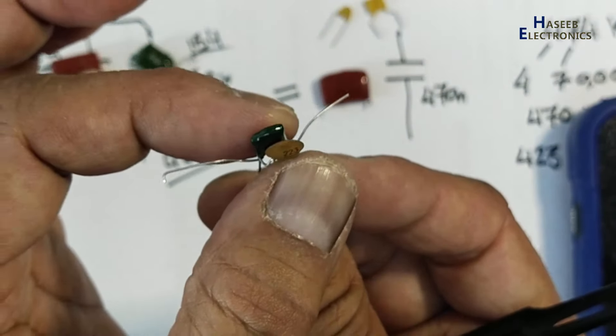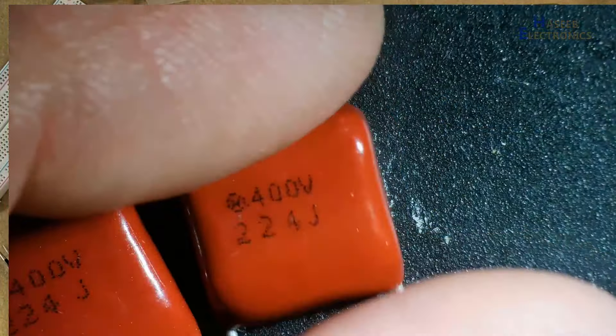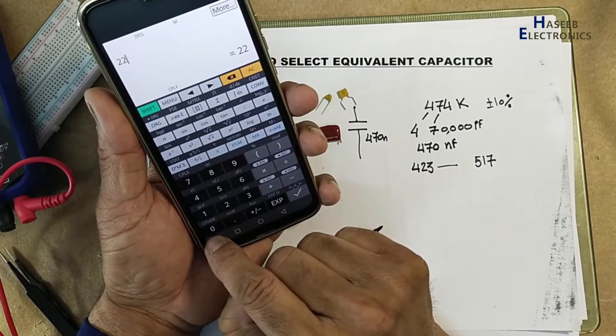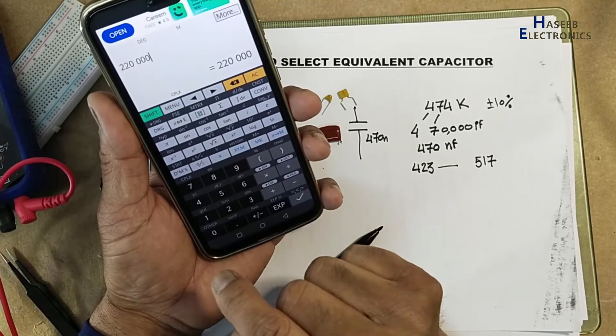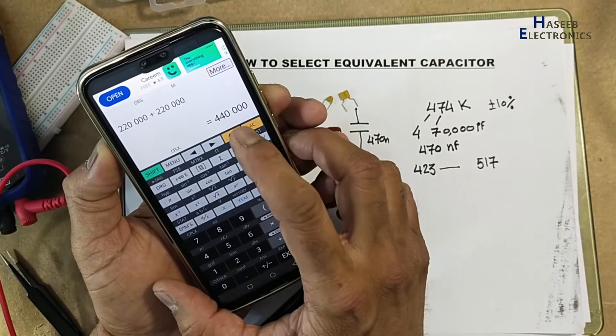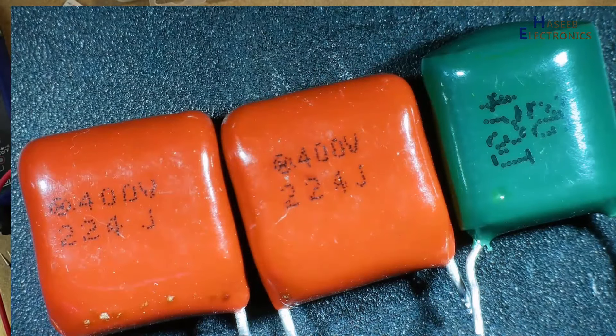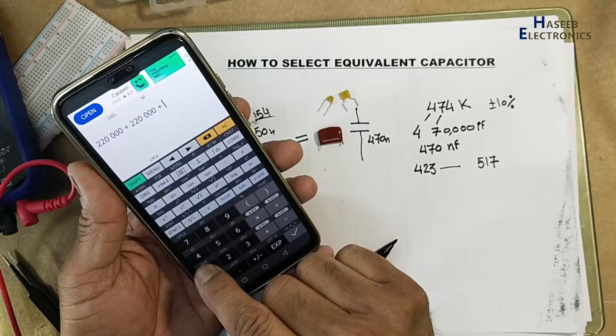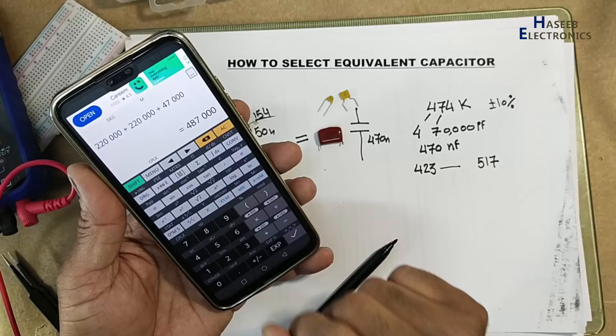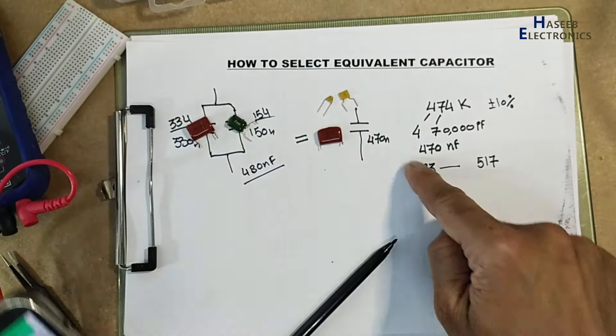So two capacitors in parallel. If you cannot find these two capacitors, then we can make combinations. Two to four, two capacitors in parallel. 224, four zeros, plus 224, four zeros. It is 440, that is also within this range. Now this is 473 plus 473, four zeros, one, two, three. It is 487. If you connect these three capacitors in parallel, so that will also equal to this one.